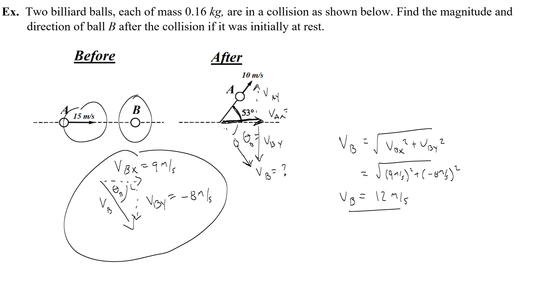And the angle, I'll write it up here. The angle would be the tangent inverse of the y component, the opposite over the adjacent, right? Because tangent is Toa. So vby, the opposite component, over vbx, the adjacent component. All right, this would be tangent inverse of vby is negative 8, and vbx is 9. This will give you negative 41.6 degrees.